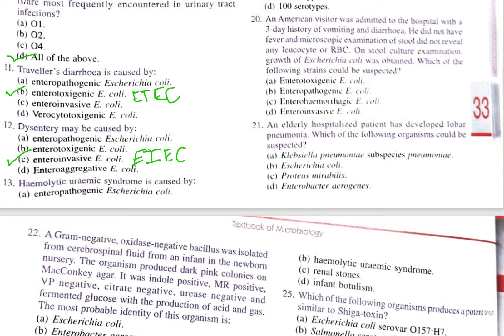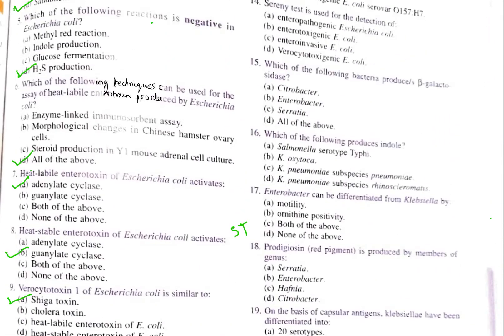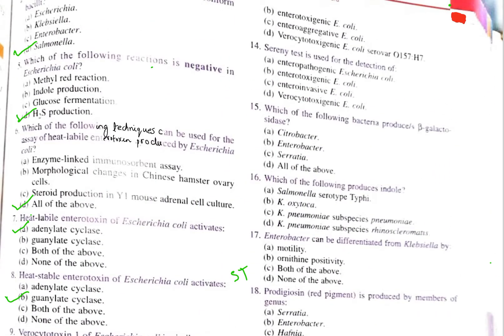Question number 13: hemolytic uremic syndrome is caused by — A. Enteropathogenic E. coli, B. Enterotoxigenic E. coli, C. Enteroaggregative E. coli, D. Verocytotoxigenic E. coli O157:H7. The correct option is D, verocytotoxigenic E. coli O157:H7, also called VTEC.